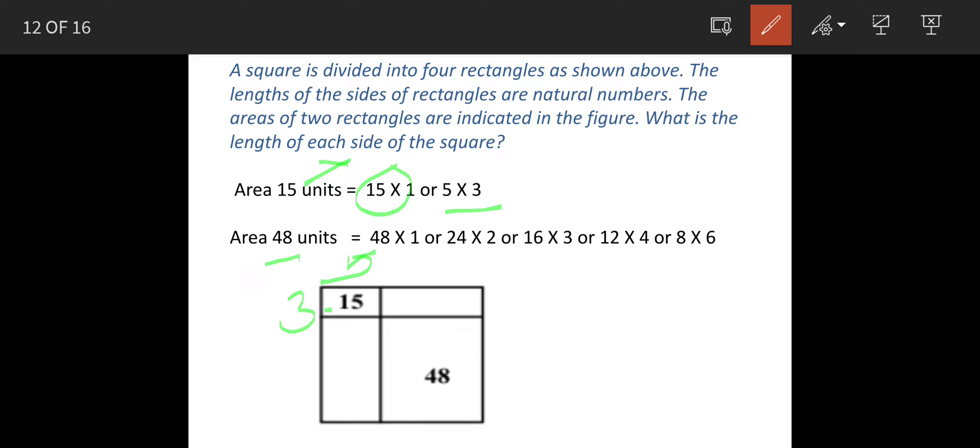Now here the area is 48 units. So again we will factor it. 1 into 48 is out because with this you cannot make a square. So we need to have such factor that numbers are close to each other. So let's try 12 and 4.